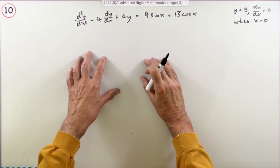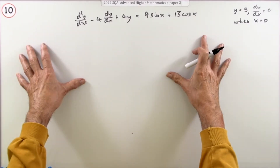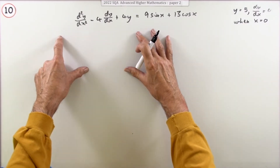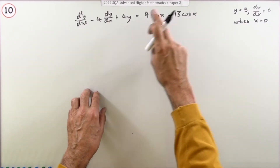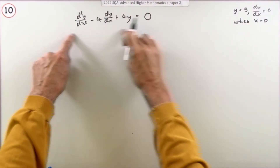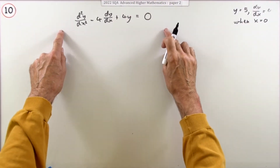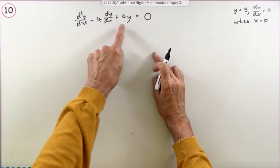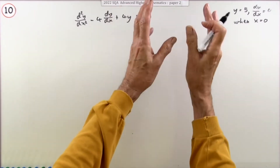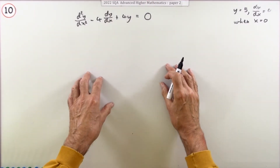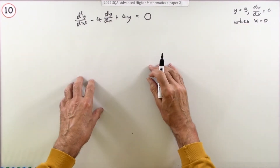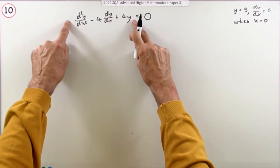There are two steps to the solution. The first step is to solve the homogeneous equation — that's the equation when the right-hand side is equal to zero. It's called the homogeneous equation because everything is a term in y or its derivatives; there are no terms solely in x, which would make it non-homogeneous.